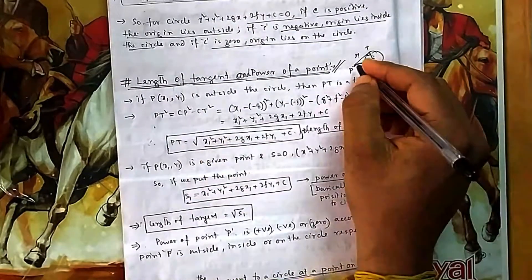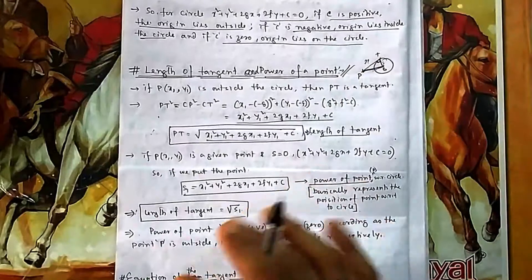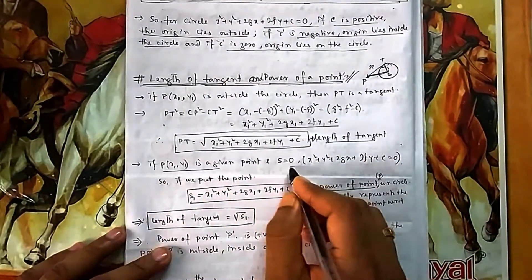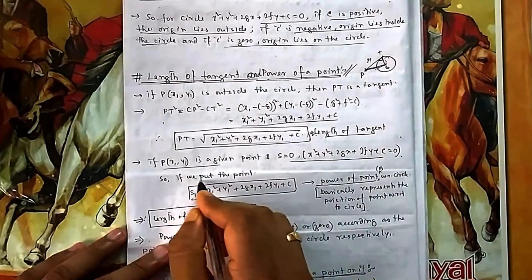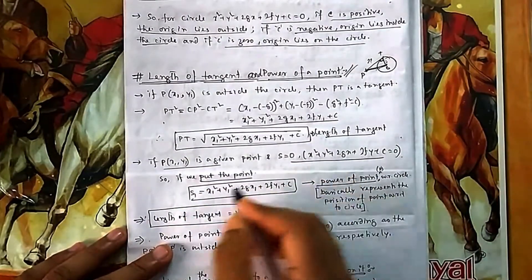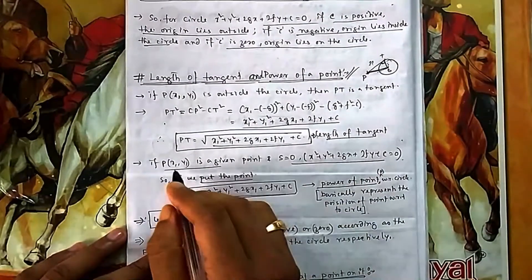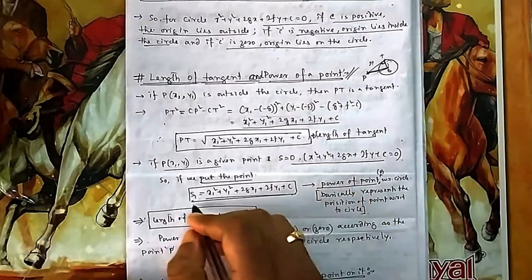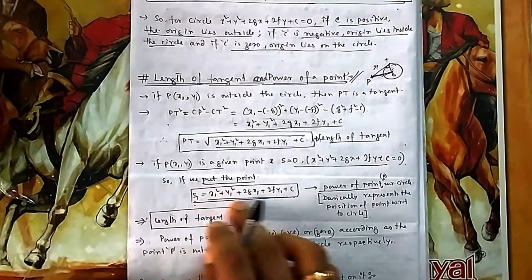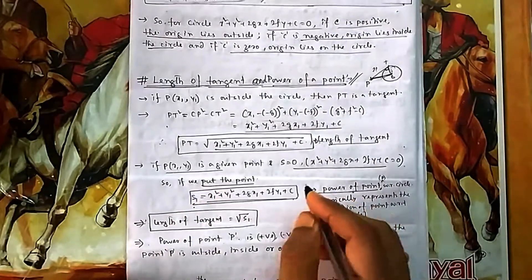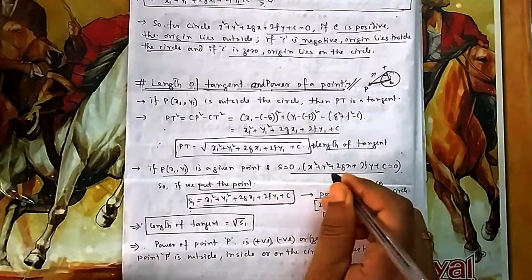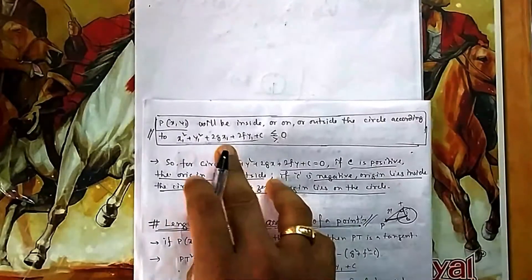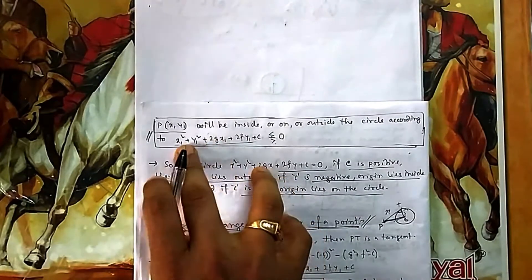Now, what is the power of a point? For a given circle and point P, when you substitute the point into the circle's equation — replacing x with x₁ and y with y₁ — the resulting value S₁ is known as the power of the point P with respect to the circle.